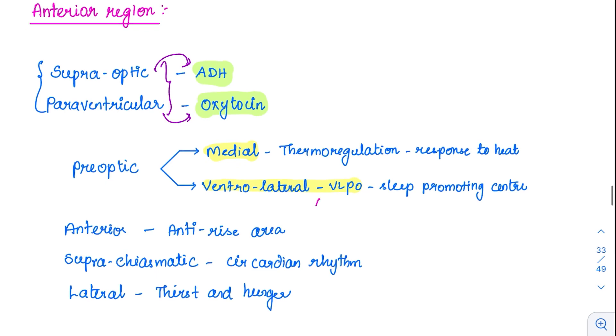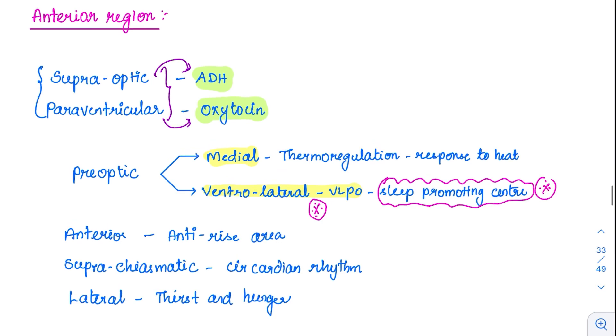This ventrolateral pre-optic nuclei is a must to remember. In sleep discussion we will see that this area is a sleep-promoting center. This area is involved in promoting sleep. Then medial nuclei of pre-optic is for thermal regulation - it responds to heat.